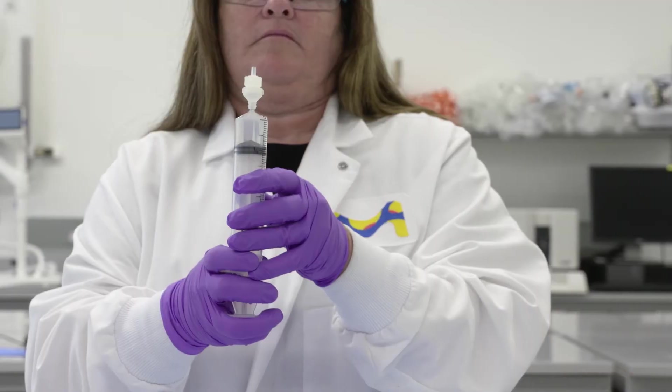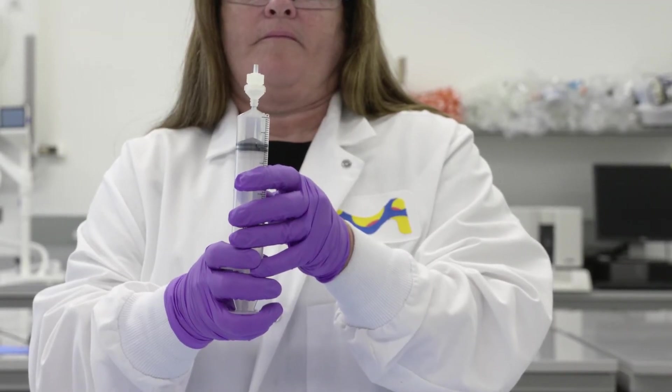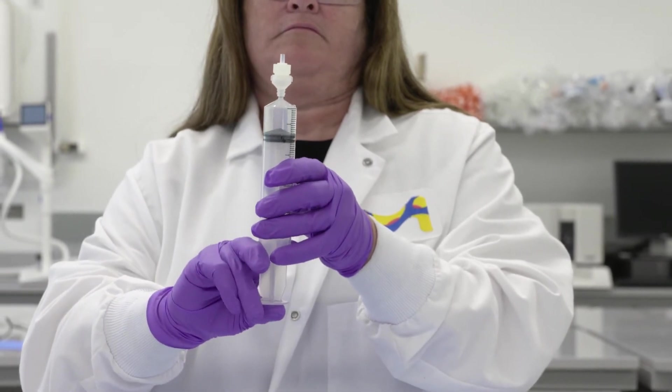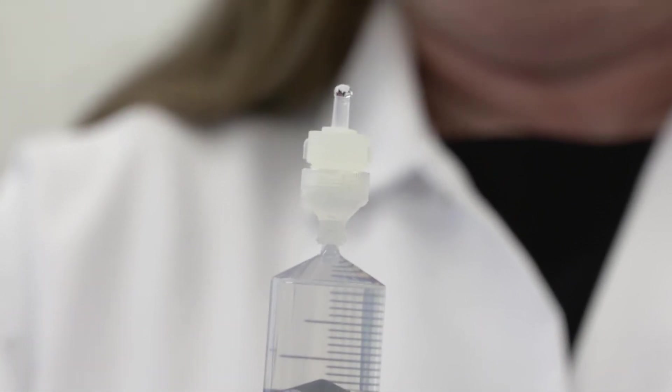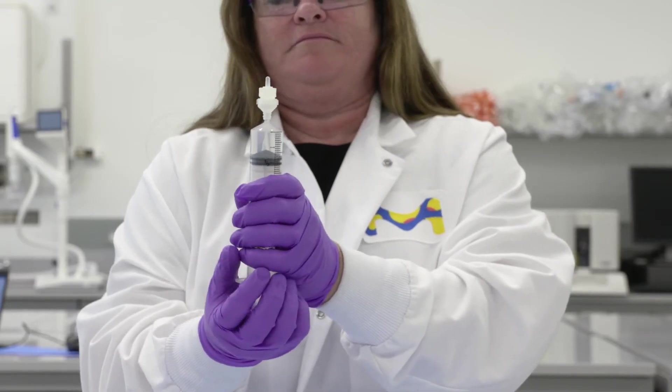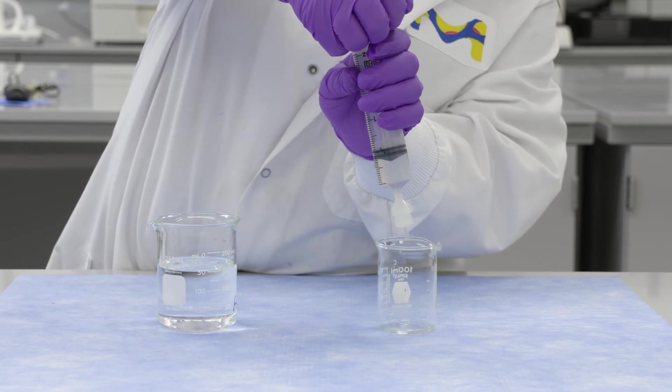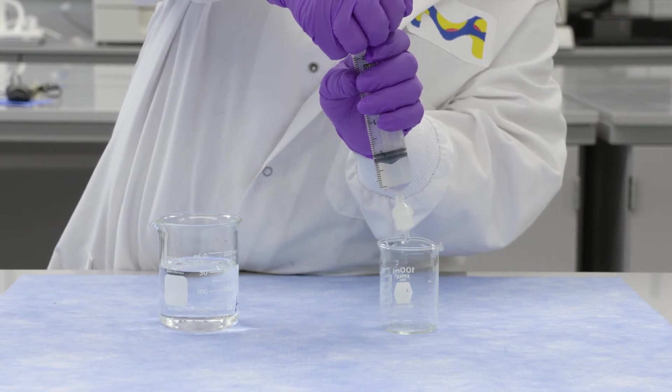Press syringe plunger to remove air from inside the device and fill the device. Continue depressing the syringe barrel until one to two drops of liquid can be seen coming out from the Swinex outlet. Invert the setup and continue to depress the syringe barrel until the desired volume is filtered and directed into your receiving container.